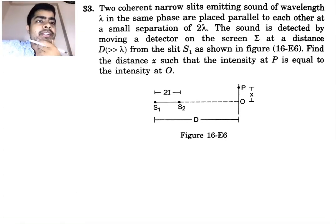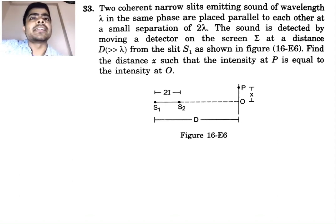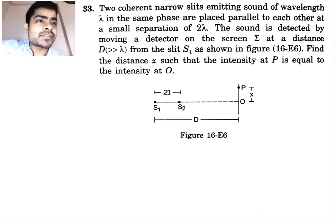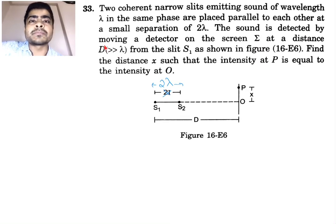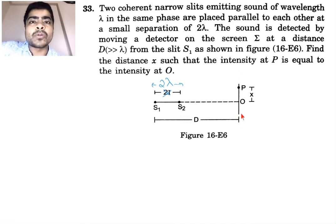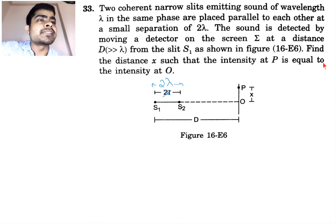We are looking at question number 33 from chapter 16 of SC Verma's Concepts of Physics. Two coherent slits emitting sound of wavelength lambda in the same phase are placed parallel to each other at a small separation of 2 lambda between S1 and S2. The sound is detected by a moving detector on screen Sigma at a distance D, where D is much greater than lambda from slit S1. We need to find distance x such that the intensity at P equals the intensity at O.